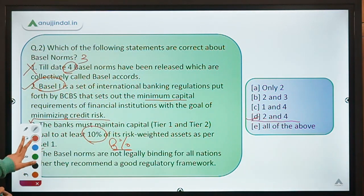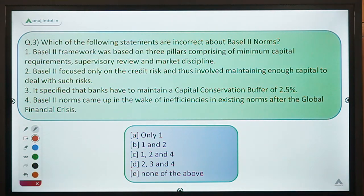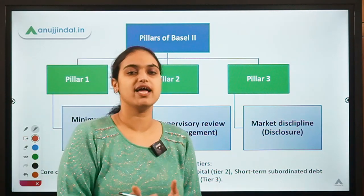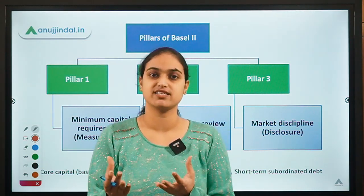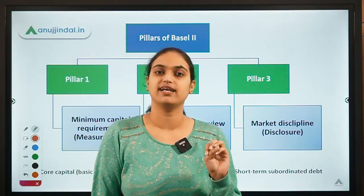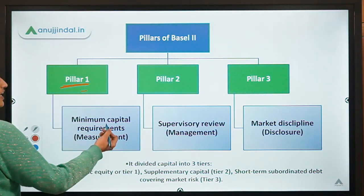Question three asks which statements are incorrect about Basel 2 norms. Basel 2 regulations were also given by the Basel Committee — guidelines for better supervision based on three pillars. The first pillar is capital requirements: how much minimum capital you should maintain. The difference from Basel 1 is that Basel 1 only addressed credit risk with tier 1 and tier 2 capital, but Basel 2 also focused on market risk and operational risk.